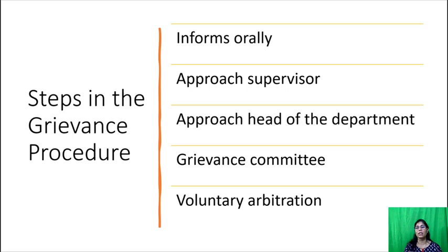The manager shall communicate his decision within three days. The worker has the right to appeal against the manager's decision, and these appeals shall be decided within a week. If the aggrieved desires, he can take along with him a union official for discussion with the authority. In case a decision has not been arrived at at this stage, the union and management may refer the grievance to voluntary arbitration.